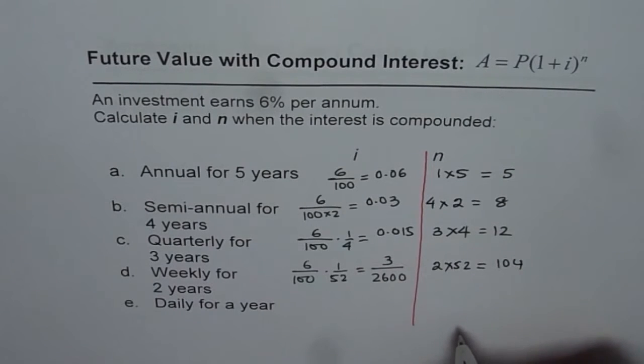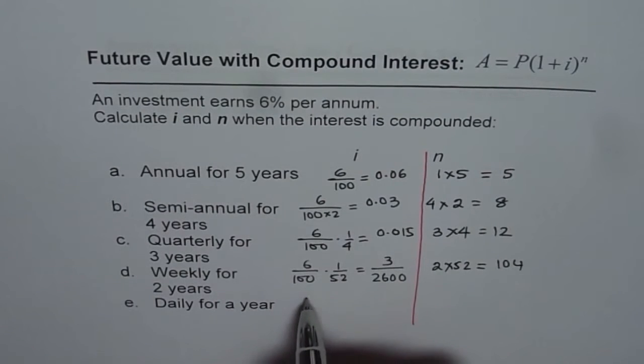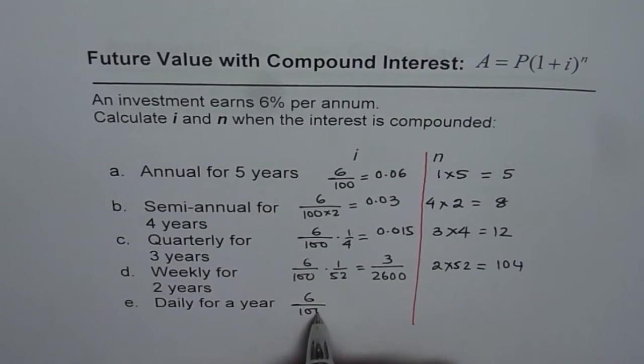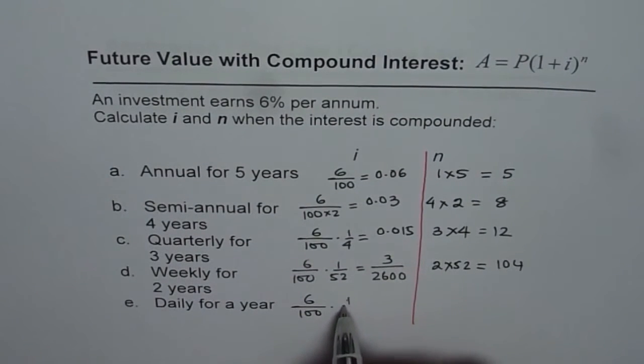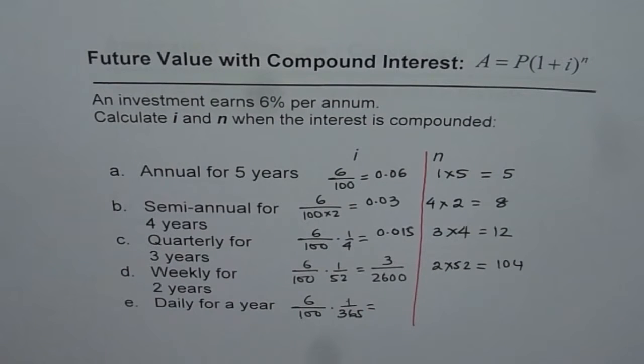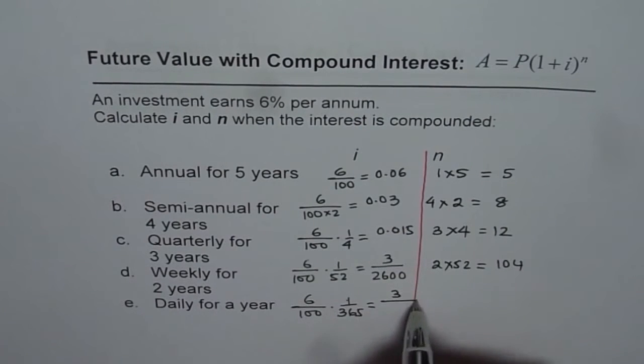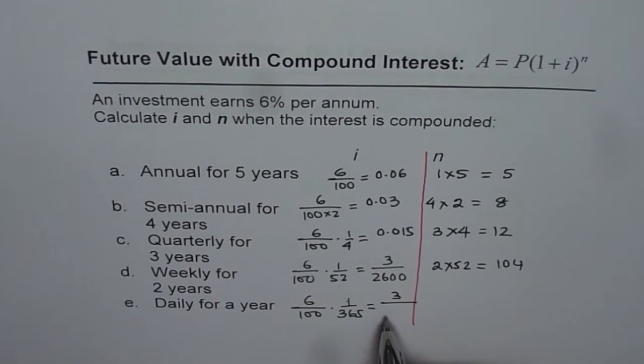The last one here is daily for a year. Daily means this year. Every year is 365 days. So divide by 365. So we have 0.06 divided by 365. That gives us, let me write fraction value itself, 3 over 18250.